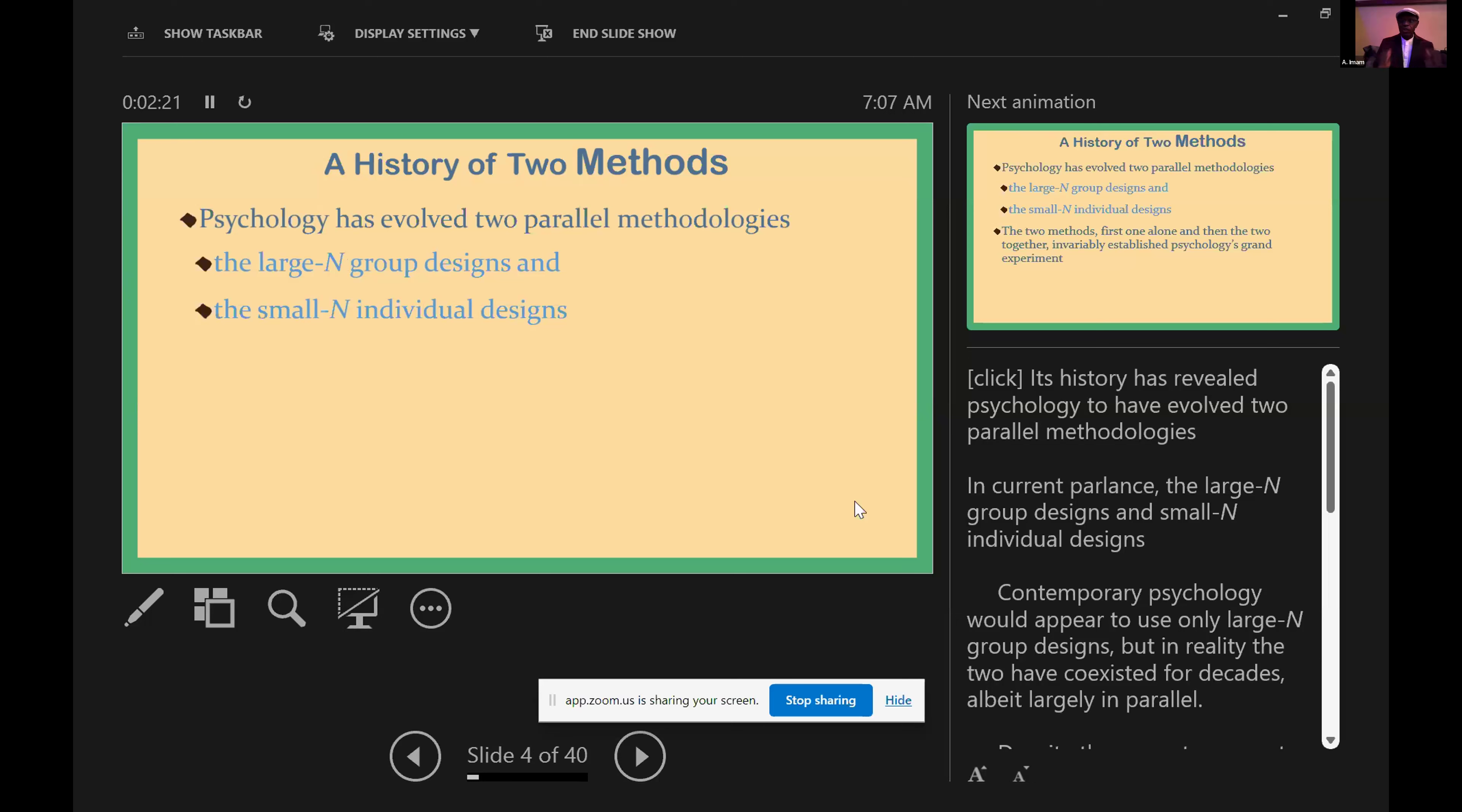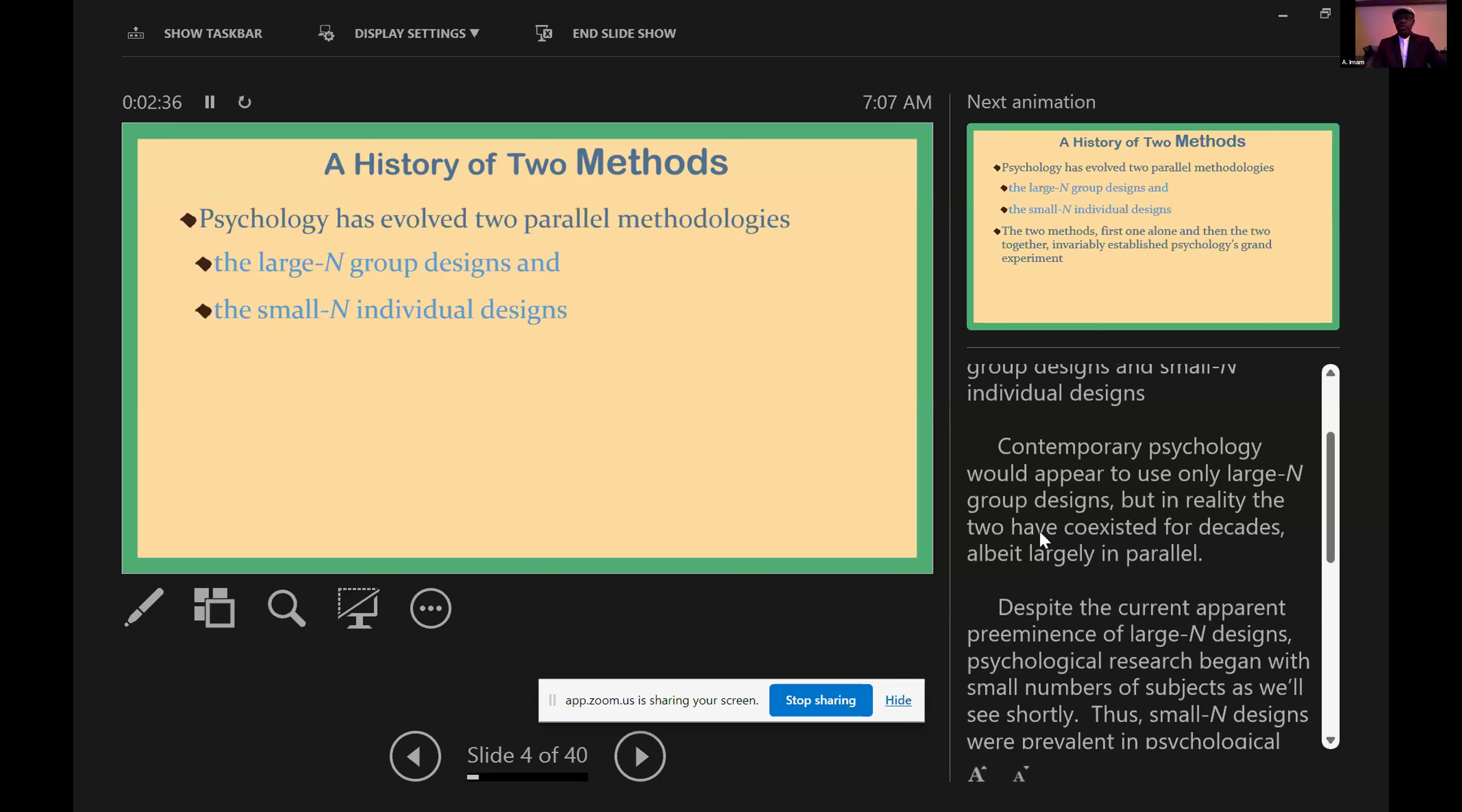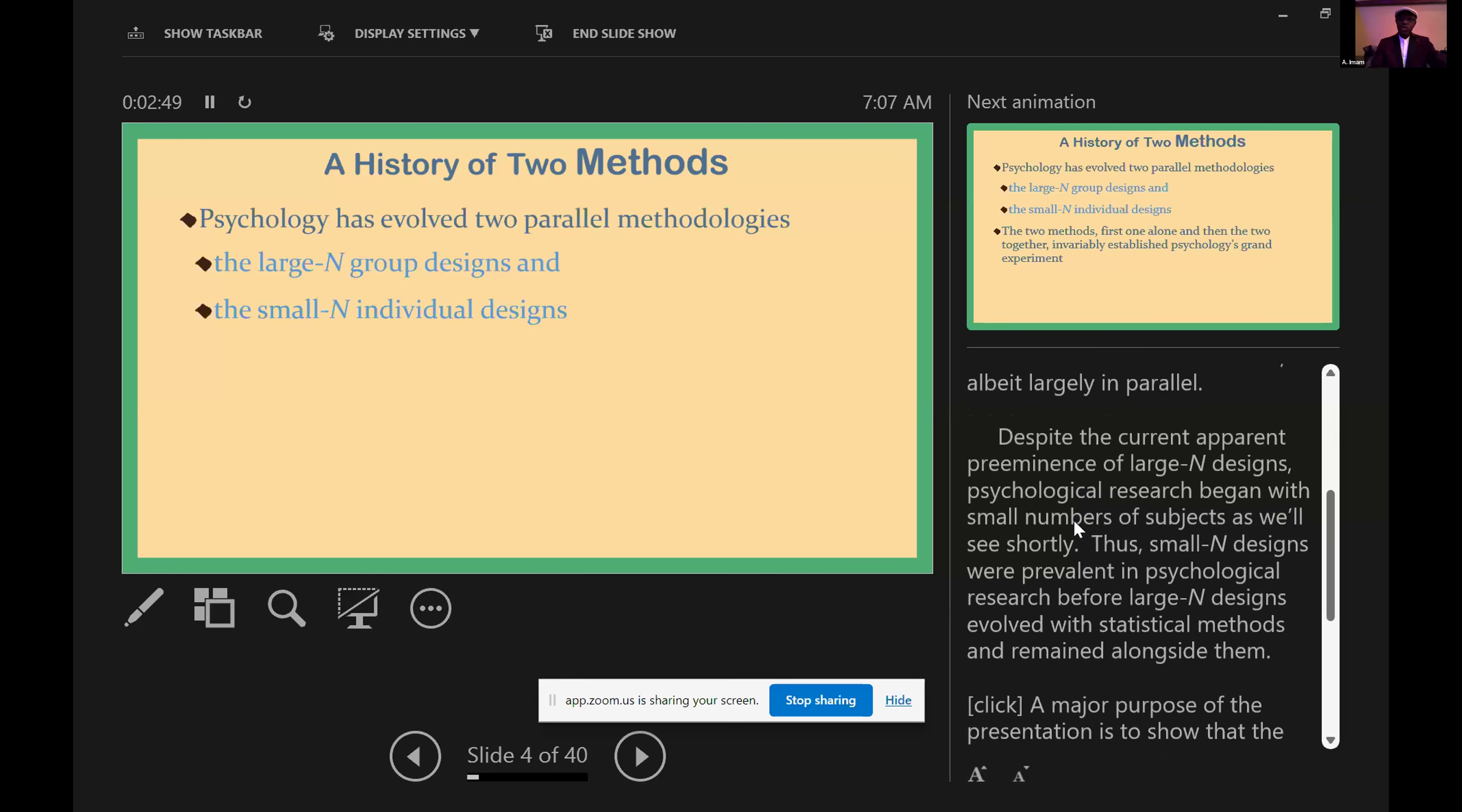In current parlance, the large-N group design and small-N individual design. Contemporary psychology would appear to use only large-N group design, but in reality the two have coexisted for decades, albeit largely in parallel. The current apparent predominance of large-N designs in psychological research began with small numbers of subjects as we will see shortly.